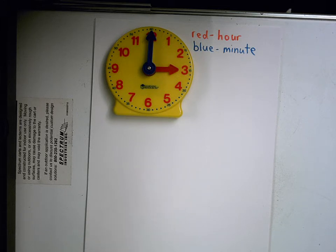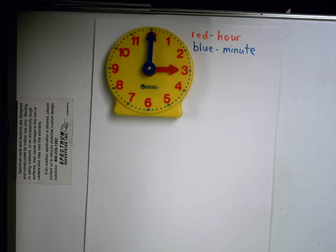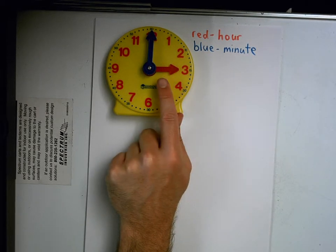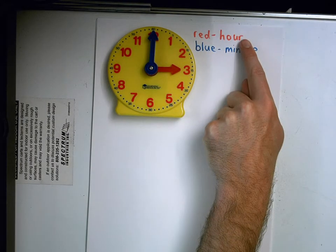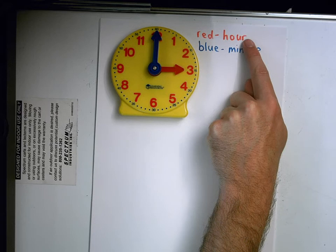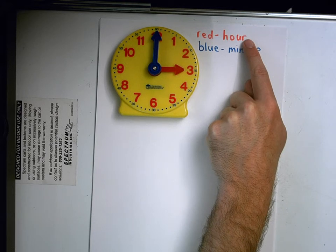Now this clock also has the hands as different colors. So the short red hand is called the hour hand. It tells us what hour it is of the day.